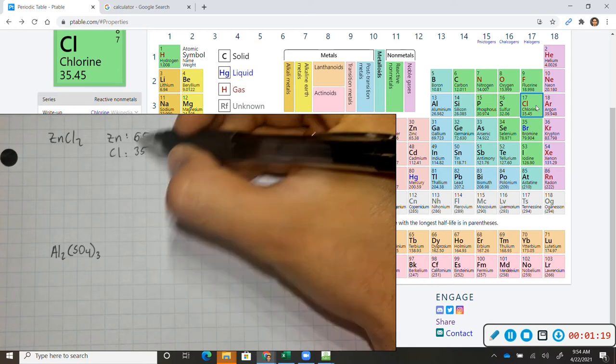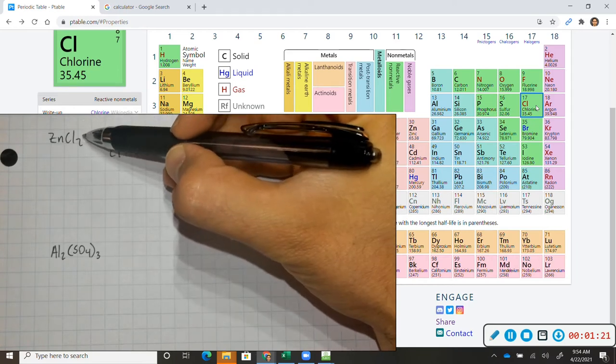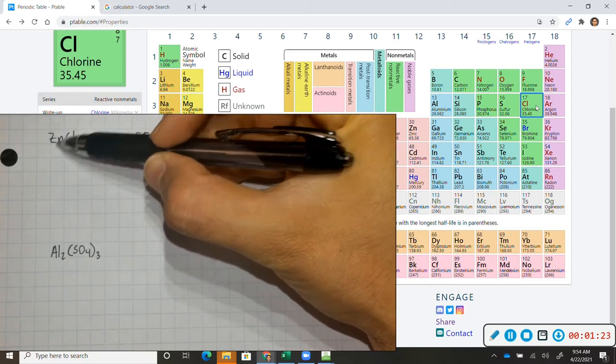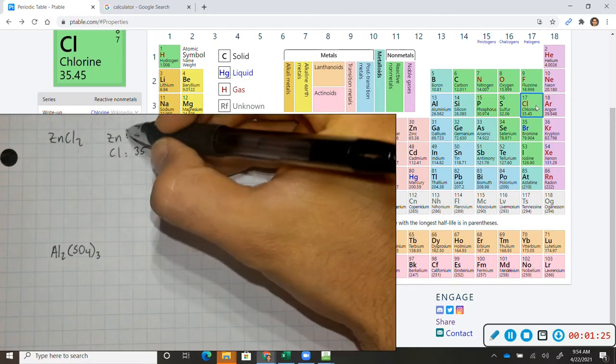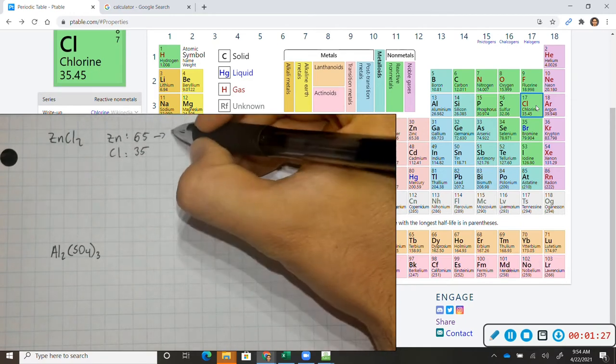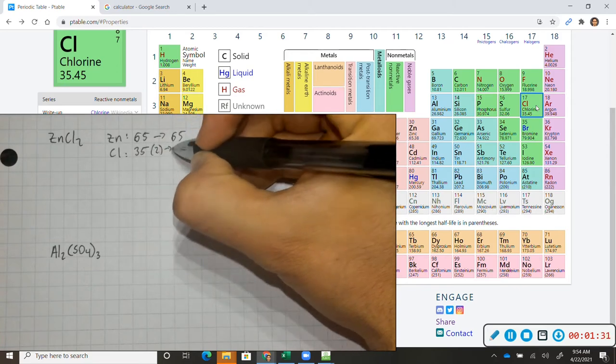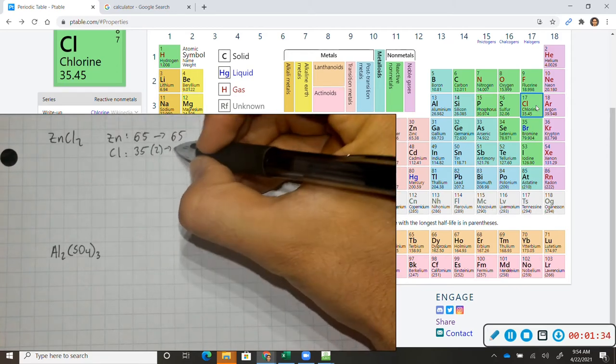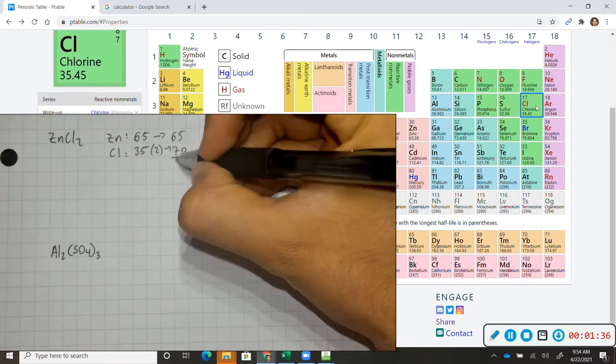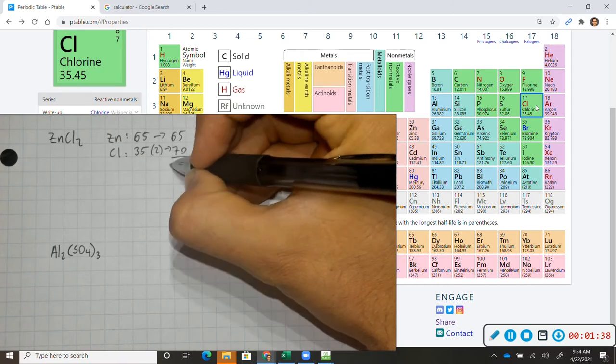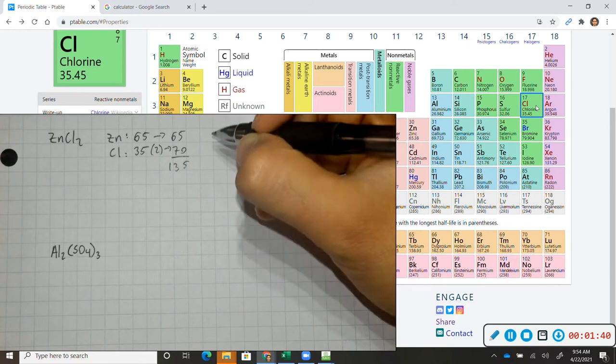So now in this case, we do need to consider the number of atoms inside this molecule. So notice we have one zinc atom, and we have two chlorines, so we go ahead and multiply 35 times 2, and we get 70. And we add that, and we get a mass of 135 grams per mole.